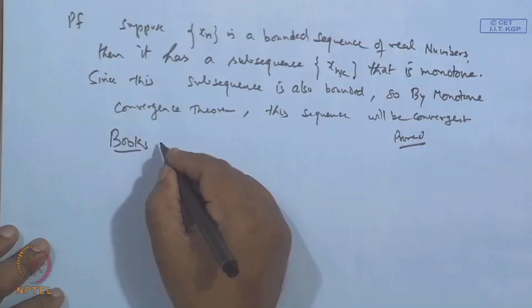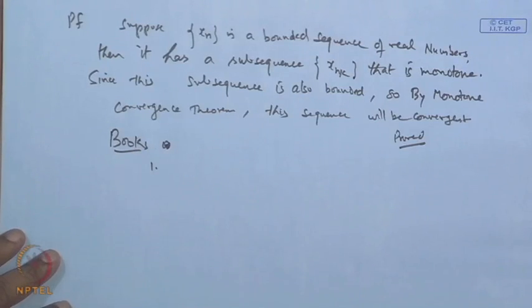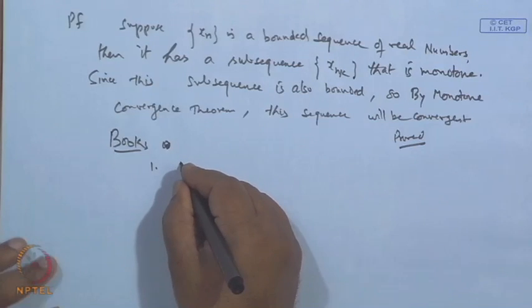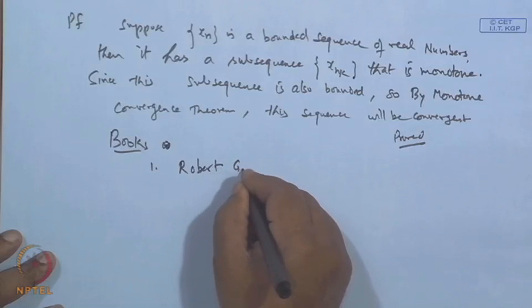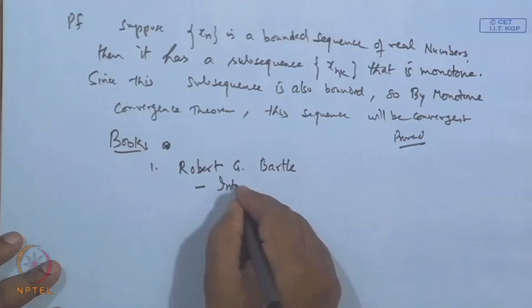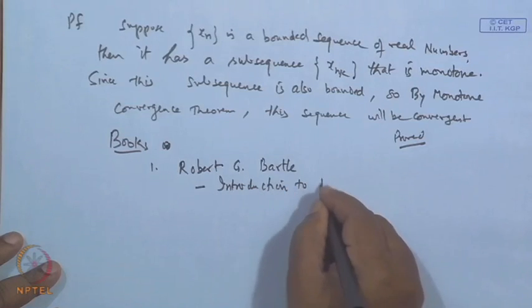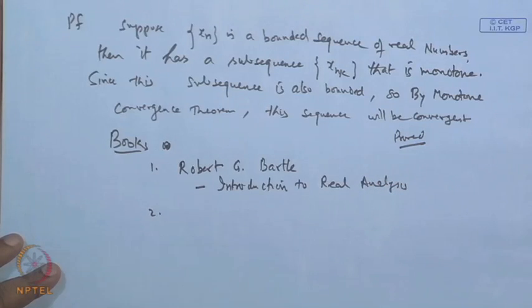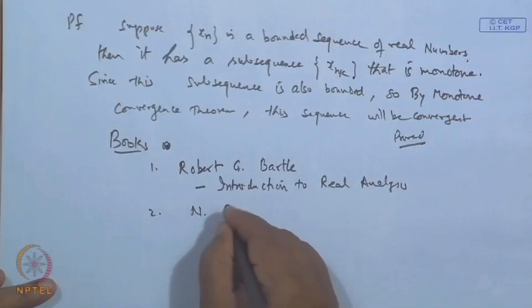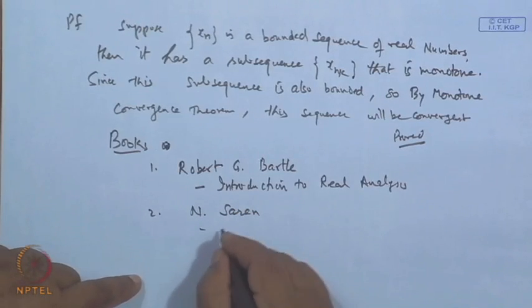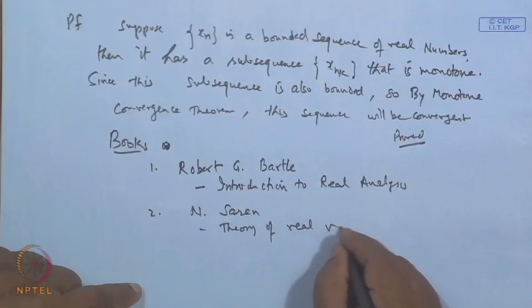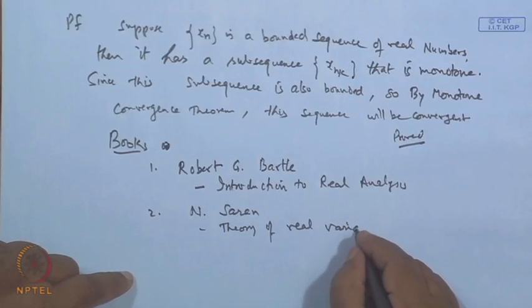This completes the first module on Cantor's, Dedekind's, and the theory of sequences. The main reference books used are: first, Robert G. Bartle's Introduction to Real Analysis, and second, a book by Ensign on Theory of Real Variables or Theory of Real Functions.